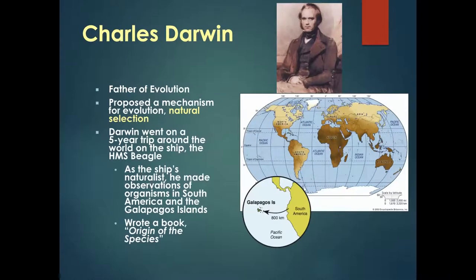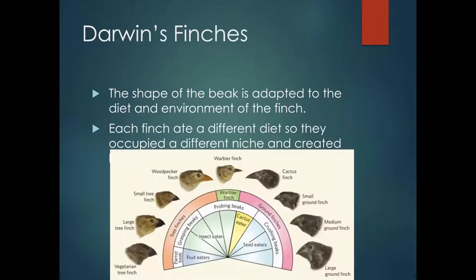Charles Darwin is considered the father of evolution. He proposed natural selection as a mechanism for evolution. Darwin went on a five-year trip around the world on the HMS Beagle, making observations of organisms in South America and the Galapagos Islands. He also wrote a book called The Origin of Species. Darwin studied finches and looked at how the shape of their beaks adapted to their diet and environment. Each finch ate a different diet, occupied a different niche, and over time their beaks varied based on the food they consumed.